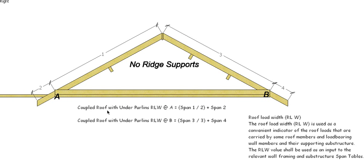If we go to a coupled roof that has under purlins, a couple of different scenarios here. Again this one has no ridge support. So for A it is span 1 divided by 2, so it's basically that span there, plus span 2. And over on this side where we have multiple purlins, we're going to have span 3 divided by 3 because there are 3 sections, plus our overhang span 4.